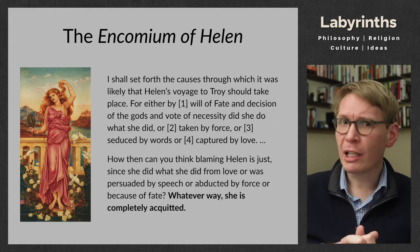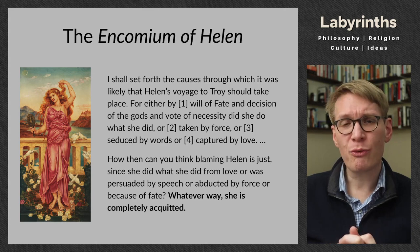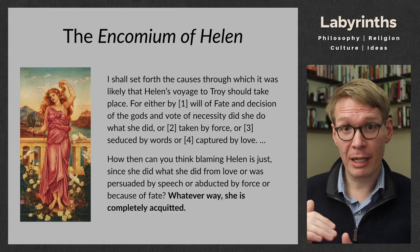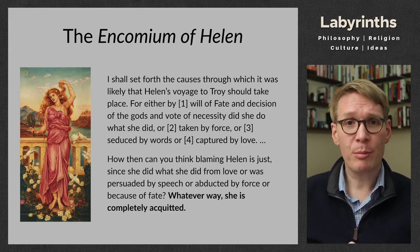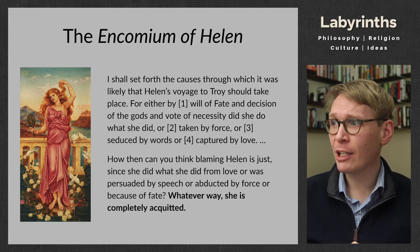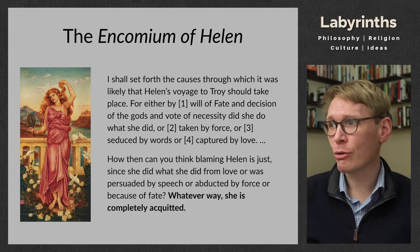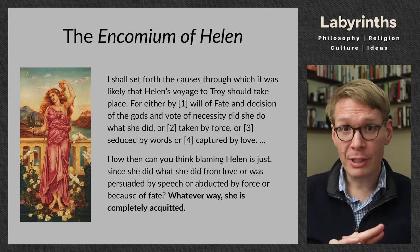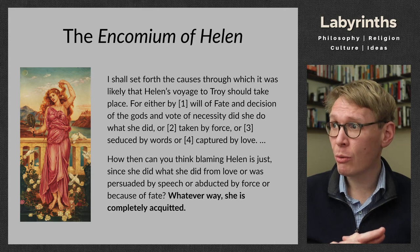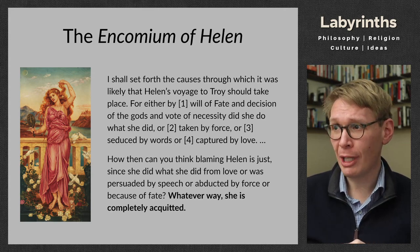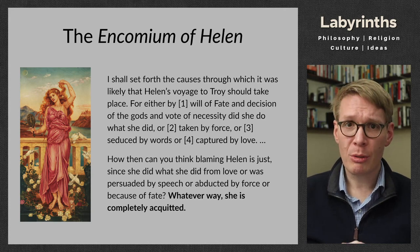This is the last slide. We're not going to look at the speech in great detail, but let's look at just the arguments he makes, because he makes four in particular and moves through them very systematically. He writes: 'I shall set forth the causes through which it was likely that Helen's voyage to Troy should take place.' Why did she leave with Paris and thus incur the wrath of Agamemnon and begin the Trojan War? He introduces it as 'likely' — he can't say definitely, because he doesn't have that information. But looking at it, he says it's likely one of the following four: one, will of fate and decision of the gods and vote of necessity; two, that she was taken by force; three, that she was seduced by words; or four, that she was captured by love.